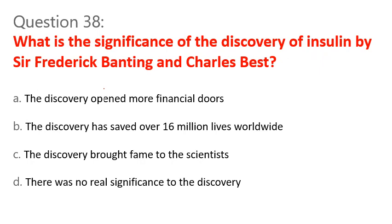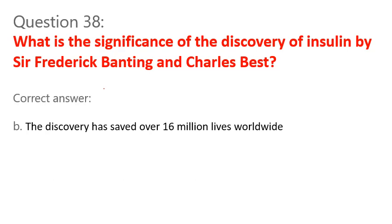Question 38. What is the significance of the discovery of insulin by Sir Frederick Banting and Charles Best? A. The discovery opened more financial doors. B. The discovery has saved over 16 million lives worldwide. C. The discovery brought fame to the scientists. D. There was no real significance to the discovery. Correct answer: B. The discovery has saved over 16 million lives worldwide.